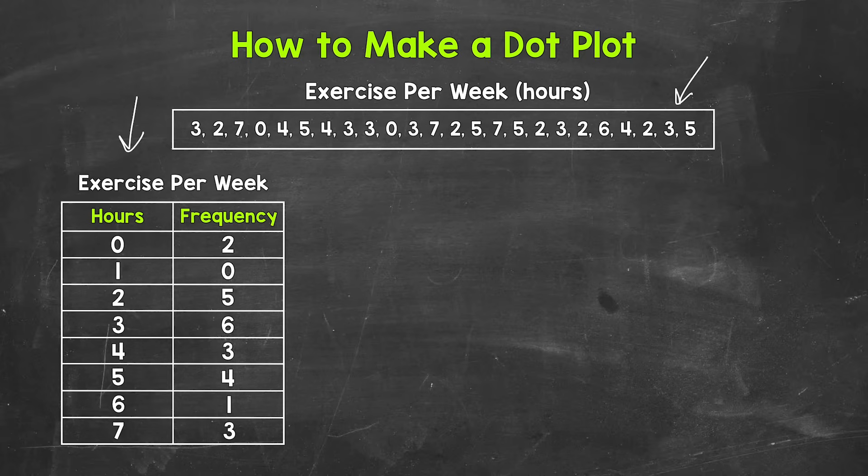As far as this frequency table, the left column has the amount of hours exercised per week. We start at zero, which was our lowest value within the data, and then we go up to seven, which was the highest value within the data. And then we have the right column, which is the frequency, the number of times those values show up within the data.